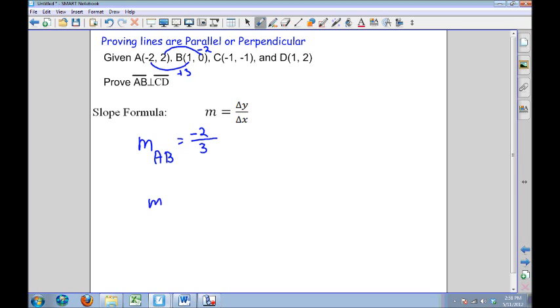I'm going to repeat the same process for the slope of CD. In the y direction, I've gone from negative 1 to 2. That's up 3 units. And in the x direction, I've gone from negative 1 to 1. That is up 2 units. So my slope for line CD is 3, change in y, over 2, change in x.